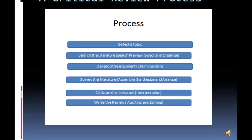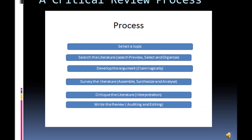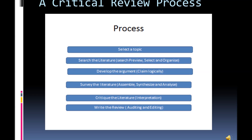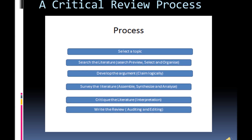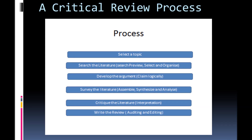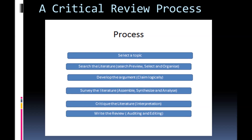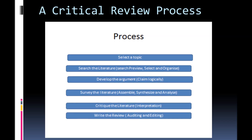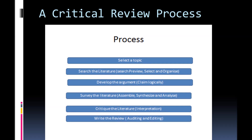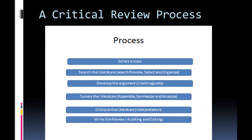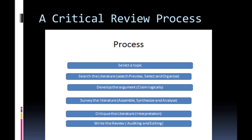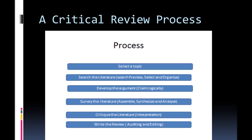A critical review process. The diagram here shows the process involved in the critical review: selecting the topic, literature search, developing the argument, survey the literature, critique the literature, then writing the review.